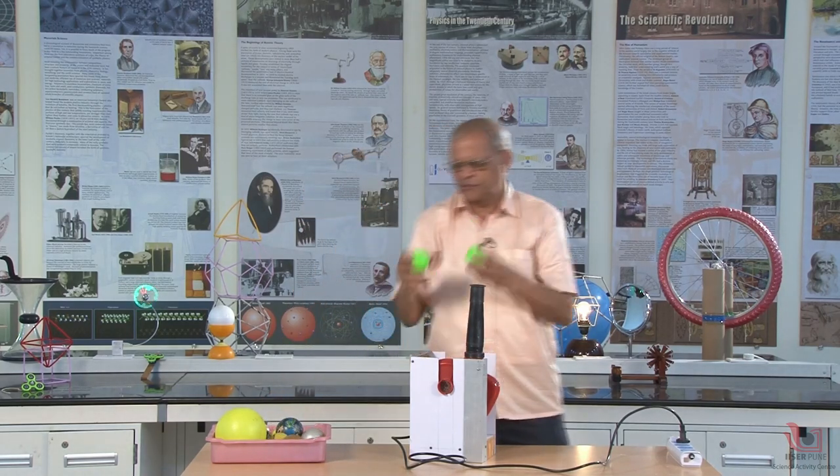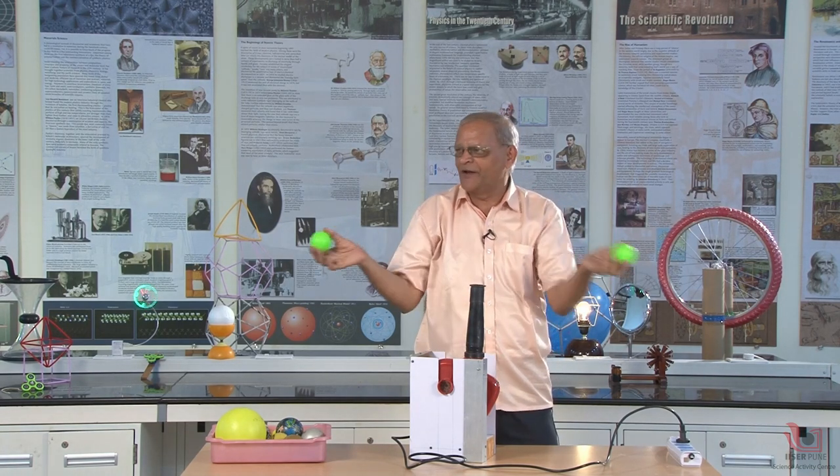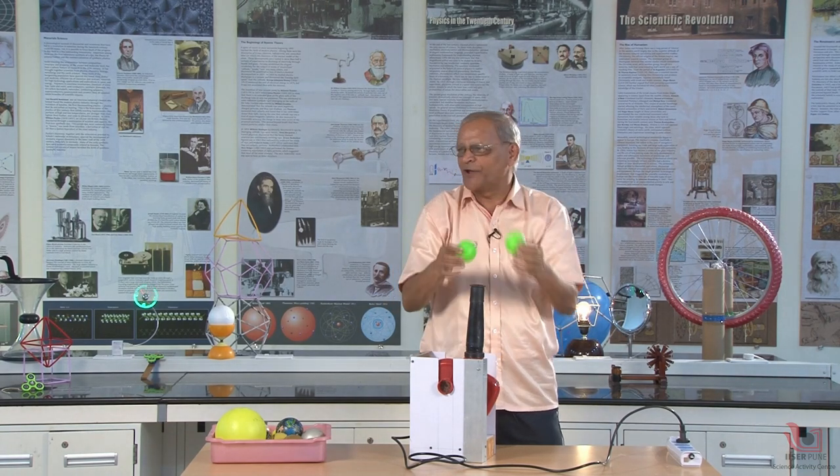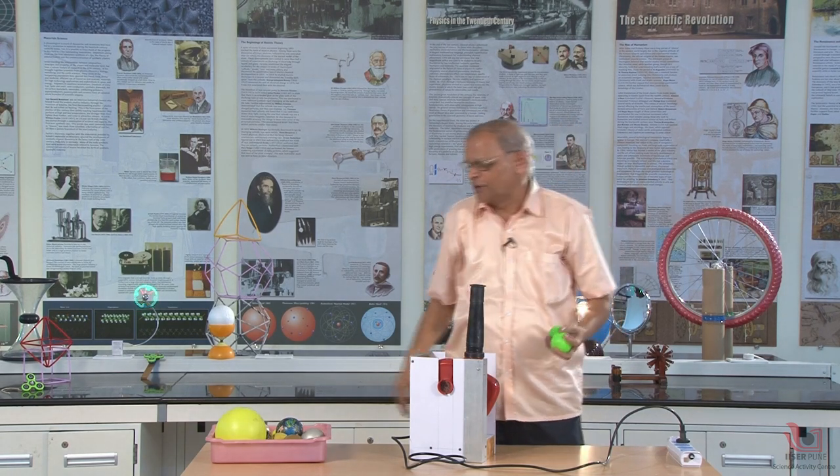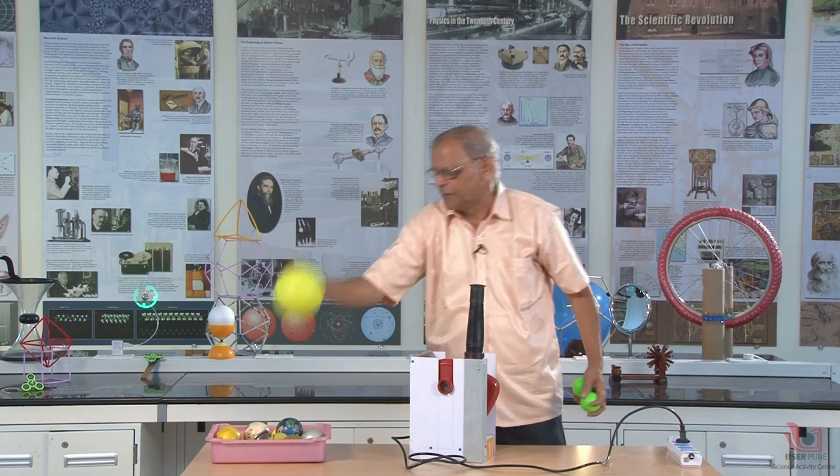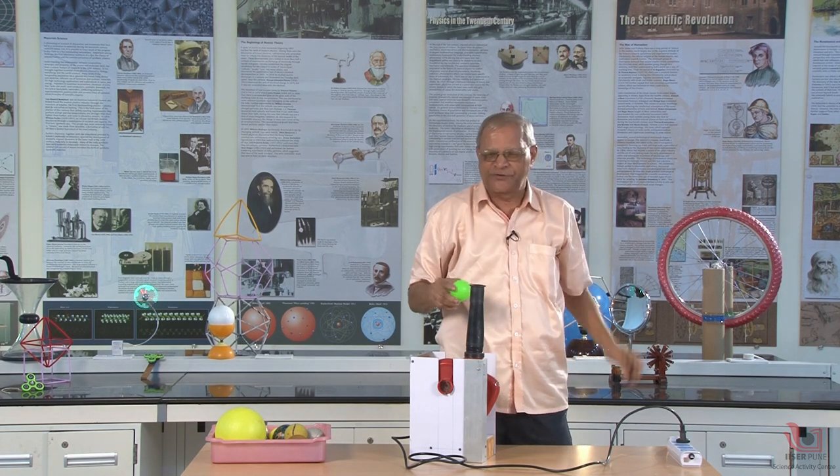Now, if I have two balls, same mass, same volume, same size, same density, identical, and if I keep them floating, they will try to occupy the same position. Because you have seen that the size and weight of the ball decide the position where it will be stable. But if the two balls try to occupy the same position, see what happens.